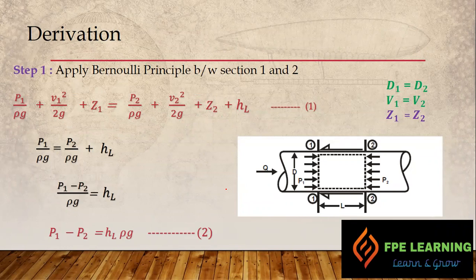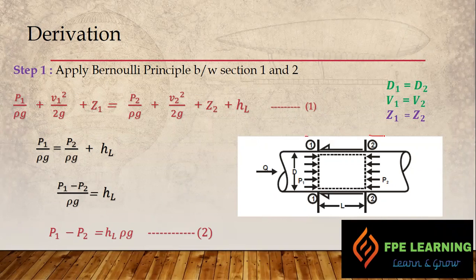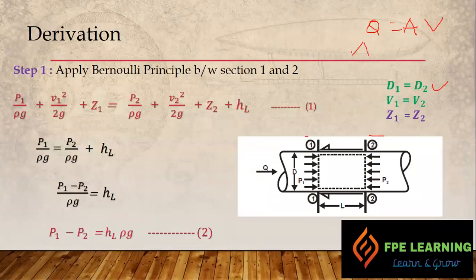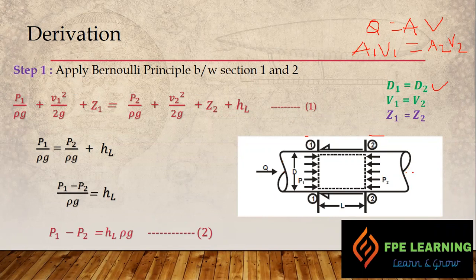Step 1: Apply Bernoulli's principle between section 1 and section 2. We have a pipe with flow Q, and the diameter is constant at both sections. Since the diameter is constant, velocity is also constant, because flow equals area times velocity (Q = A·V), so A1·V1 = A2·V2. Since area is constant, velocity is also constant. The elevation Z is also constant because both sections are at the same datum line, so Z1 equals Z2.